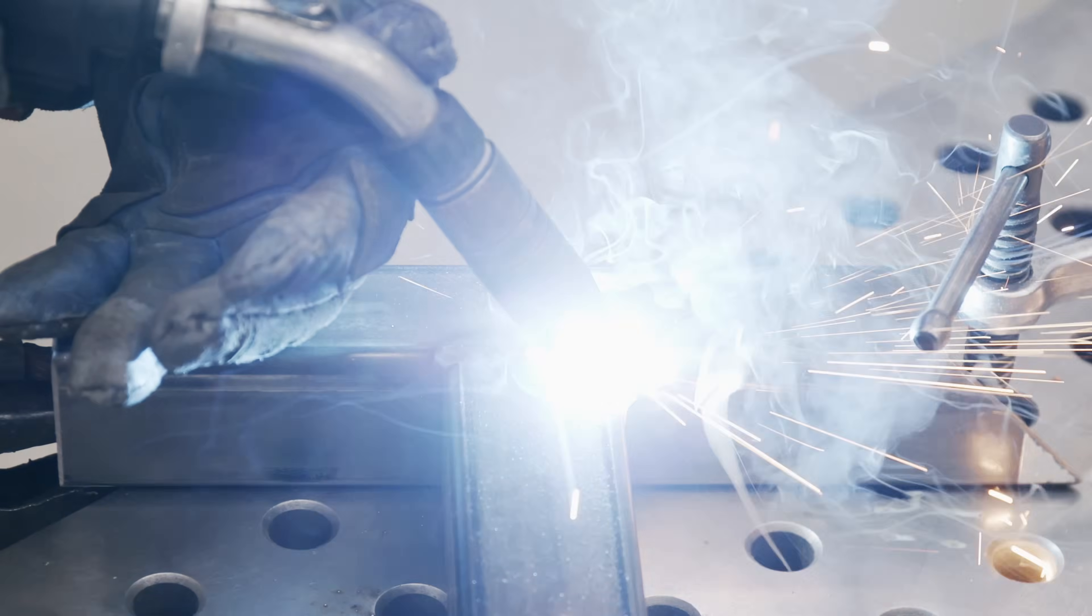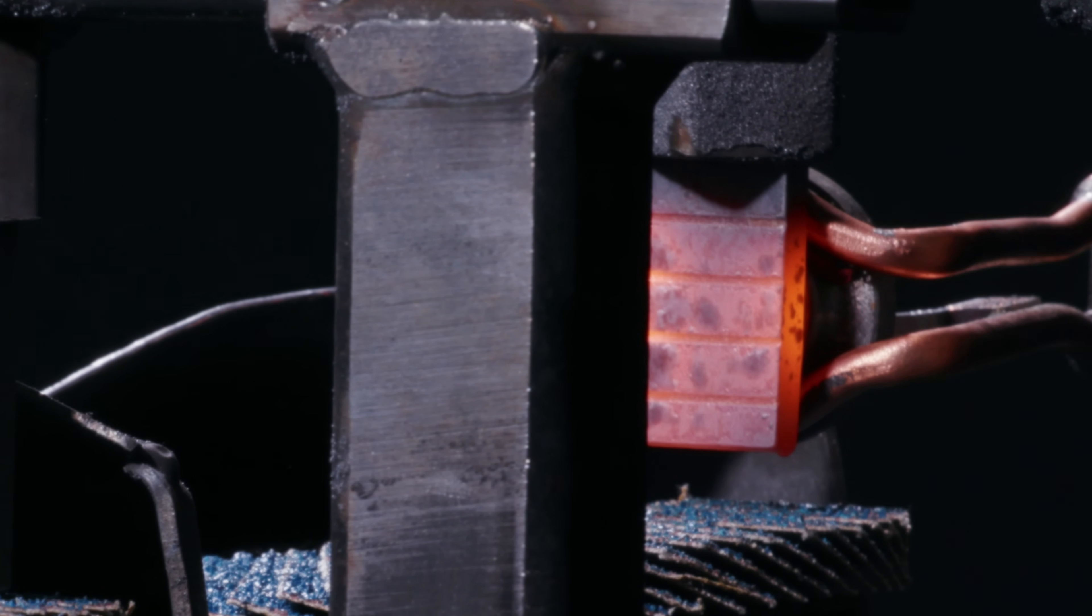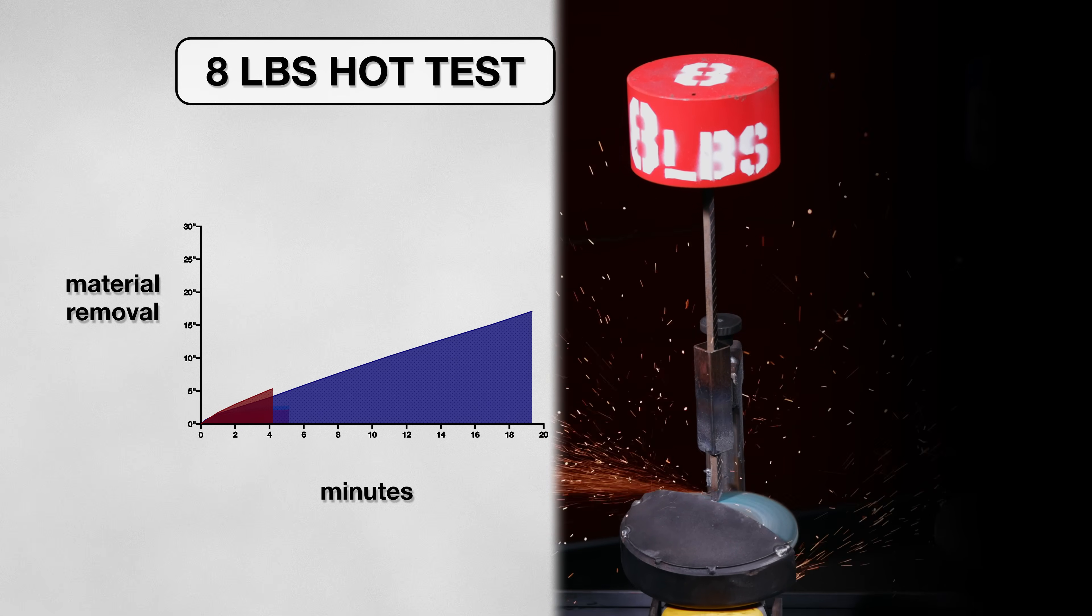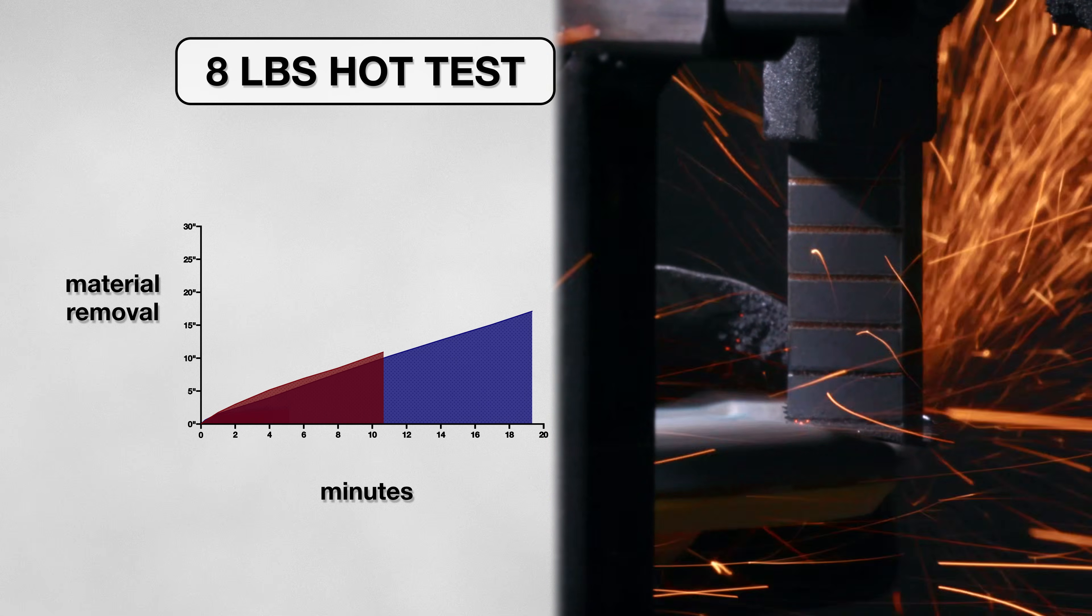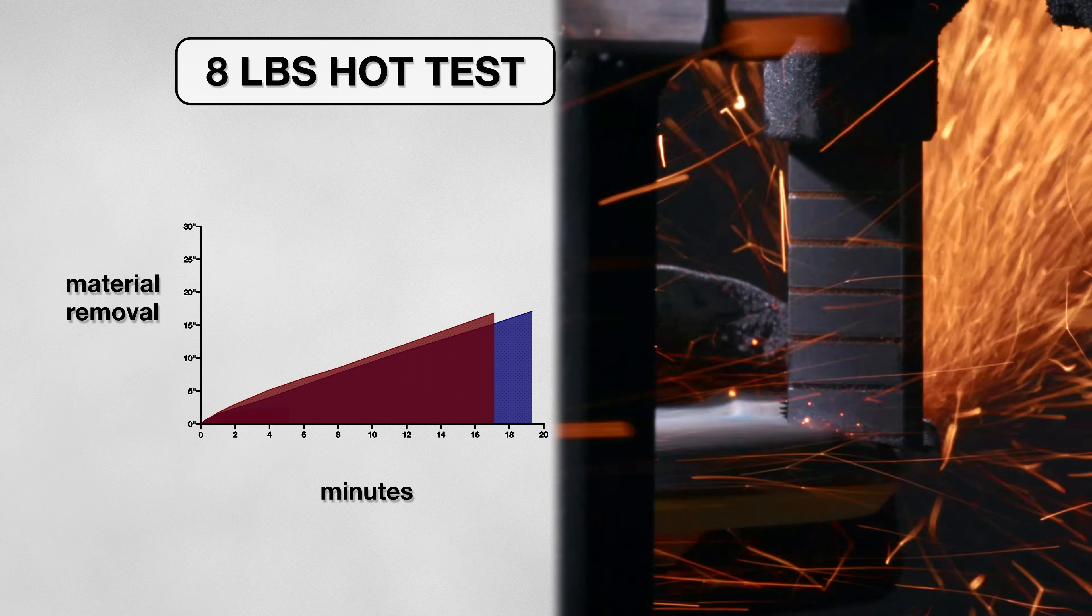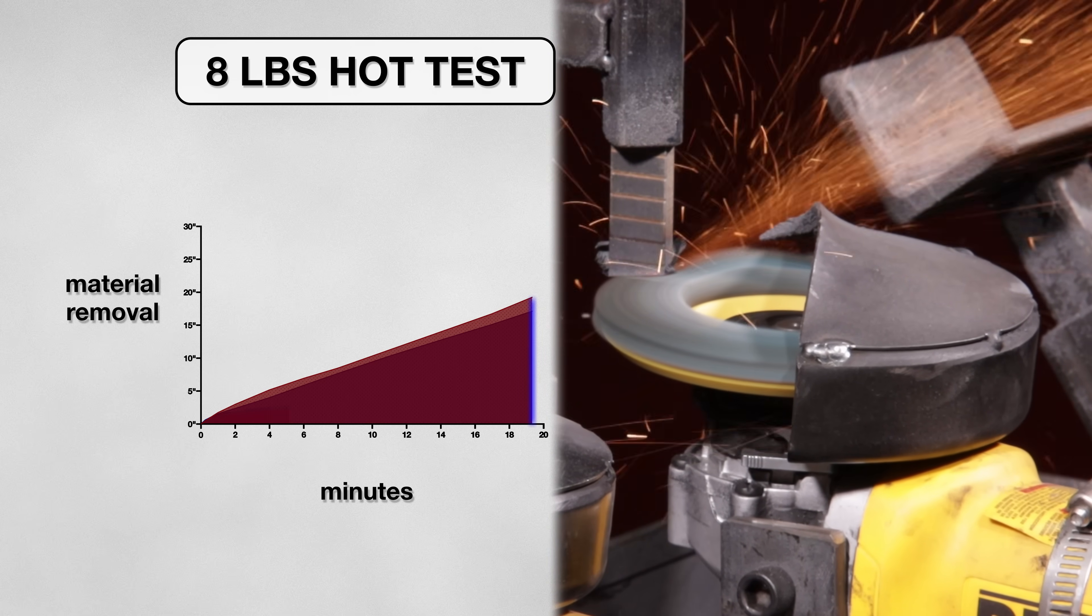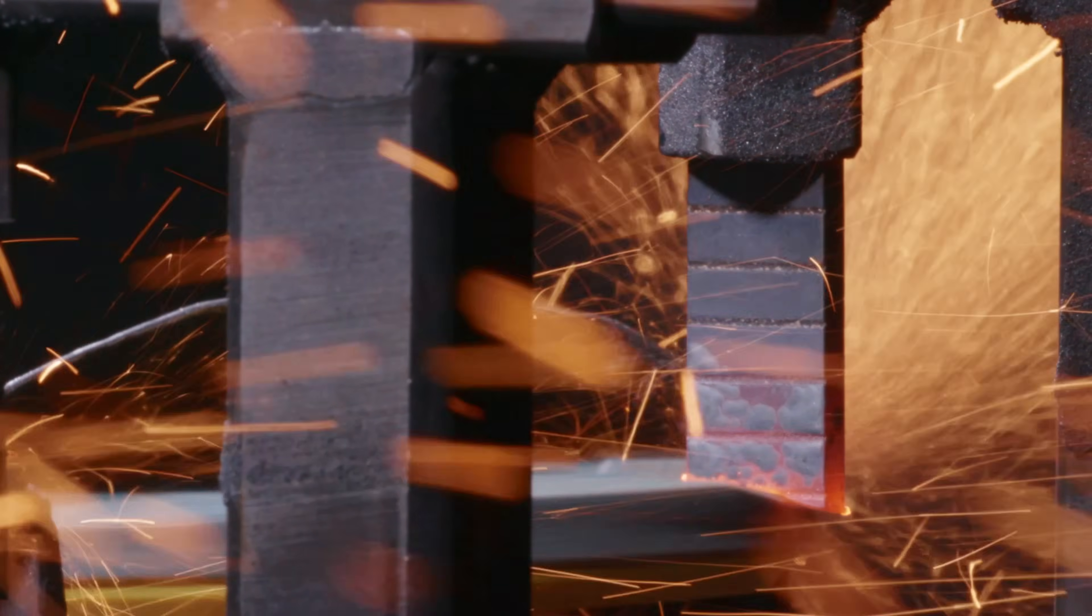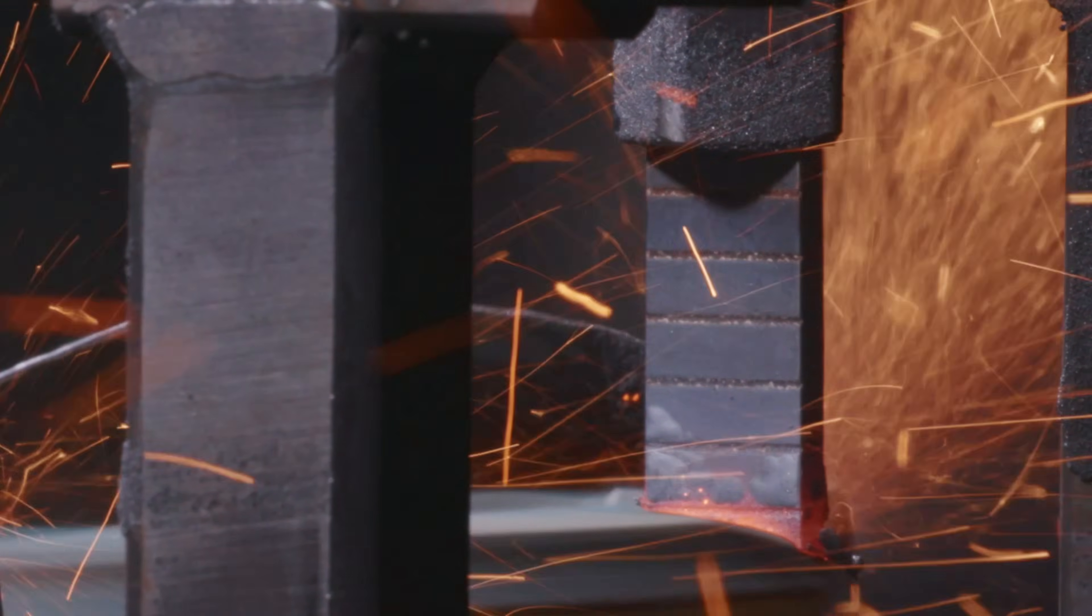Now to see how it fares against heated metal at the same weight. So once again, I heated up the first few inches of the test material and let the disk do its thing. And unlike the previous hot metal tests, the disk saw even better results. Also lasting all 20 minutes of the test, the disk was able to remove nearly 19 and a half inches of material from the coupon. This was even better than the 8 pound cold metal test. It seems the hot metal gave the disk a slight advantage, outpacing the previous test early on and managing to keep that momentum.